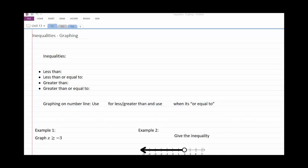Inequalities graphing. Inequalities are when you see something like this: three is less than four.